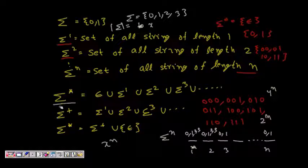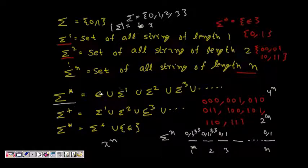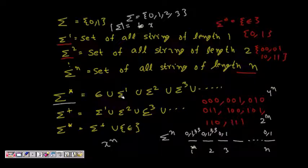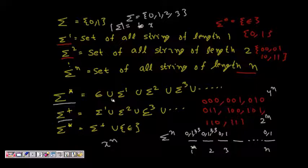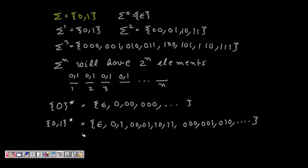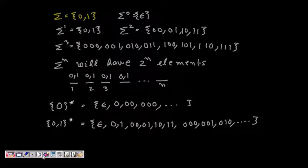Sigma star, also known as Kleene closure, is the set of all strings that can be formed using the alphabet. It equals epsilon union sigma^1 union sigma^2 union sigma^3 and so on to infinite length. Sigma plus is the same but excludes the empty string.